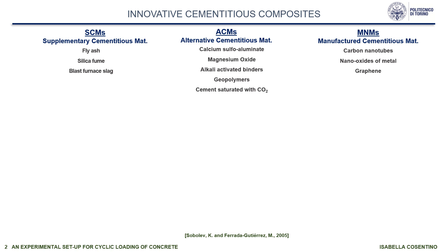The second group is alternative cementitious materials, for example calcium sulfoaluminate, magnesium oxide, and geopolymers. The third group is manufactured cementitious materials, for example carbon nanotubes, nano-oxides of metal, and graphene.